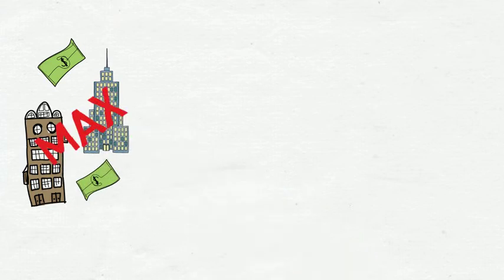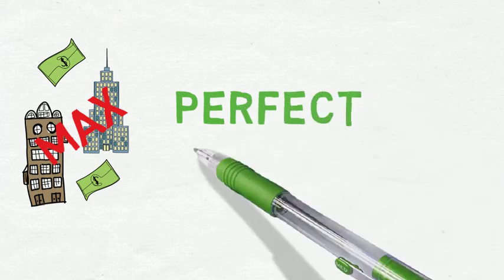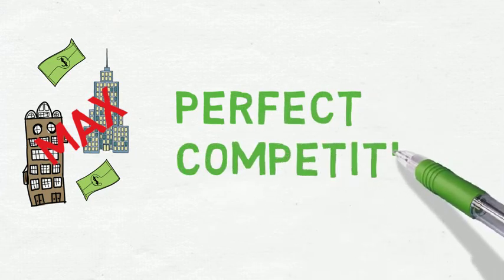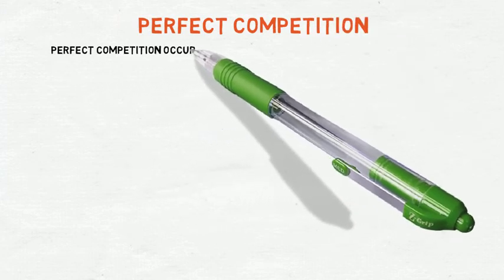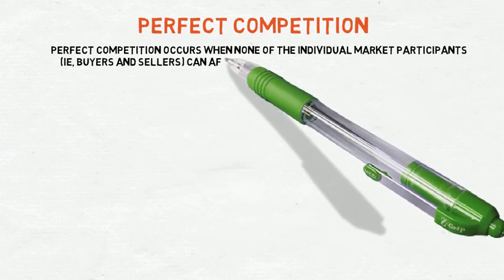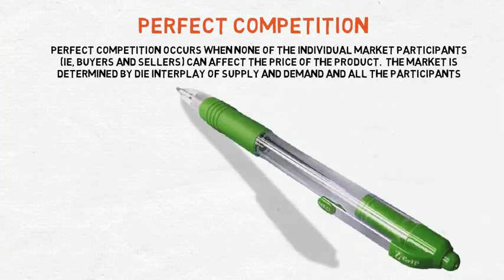In this episode we are going to look specifically at the market structure of a firm in a perfect competitive market. Perfect competition occurs when none of the individual market participants — for example buyers and sellers — can affect the price of the product. The market price is determined by the interplay of supply and demand, and all participants must accept the market price.